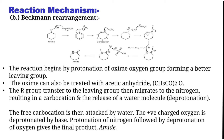The oxime can also be treated with acetic anhydride. The R group transfers to the leaving group and migrates to the nitrogen, resulting in a carbocation and release of a water molecule. The free carbocation is then attacked by water, and the positively charged oxygen is deprotonated by base. Protonation of nitrogen followed by deprotonation of oxygen gives the final product — amide.